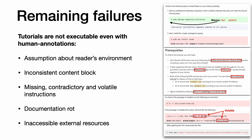With more investigation we were able to find five categories of barriers that prevented us from executing things successfully. In summary they are: assumptions about the reader's environment, inconsistent content blocks, missing, contradictory, and volatile instructions, documentation routes, and inaccessible external resources.